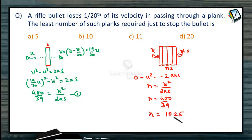Since we have crossed the 10th plank and it is 10.25, therefore we should consider the number of planks required is 11. As the planks are more than 10, we should consider n = 11.